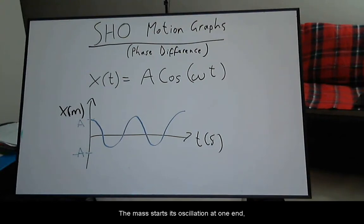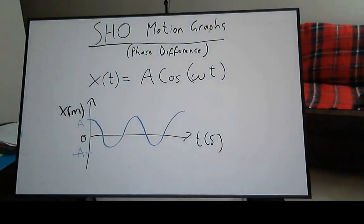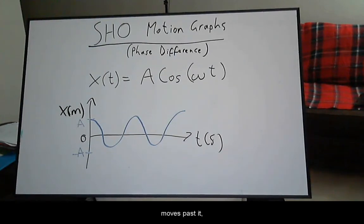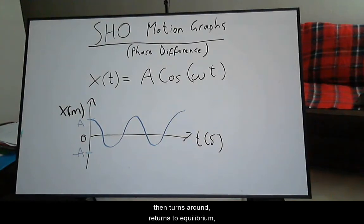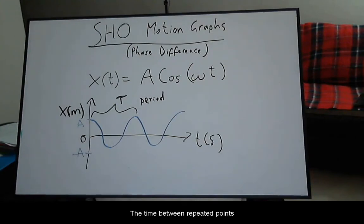The mass starts its oscillation at one end at amplitude A, then moves towards the equilibrium, which we can choose as our reference zero point, moves past it to negative A, then turns around, returns to equilibrium, goes back to amplitude and then repeats the cycle. The time between repeated points is known as the period, designated by capital T.